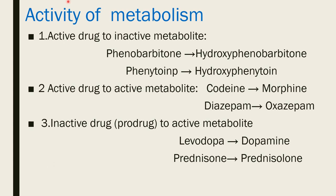Now, the consequences of metabolism. Active drugs can be converted into inactive metabolites — for example, phenobarbitone converted into hydroxyphenobarbitone, and phenytoin converted into hydroxyphenytoin, which are then excreted from the renal tubule. The second group is active drug converted into active metabolites, where both the parent drug and metabolites are active — like codeine, where the parent drug is codeine and the metabolite is morphine. Similarly, diazepam is the parent drug and its metabolite is oxazepam; both are active.